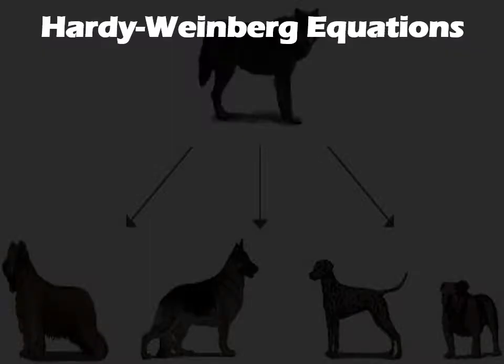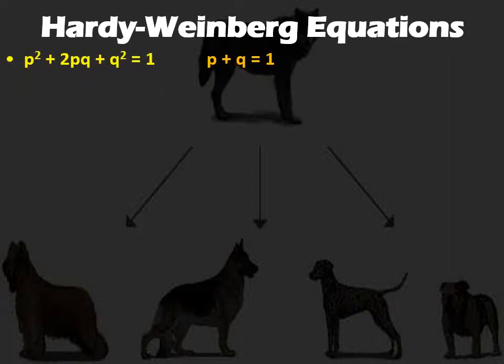We use allele frequencies to figure out what's happening to a population. There's a set of equations from the Hardy-Weinberg principle. P and Q represent the dominant and recessive allele frequencies. We write them in decimal form, from 0 to 1, where 0 is 0% and 1 is 100%. Because we're looking at frequencies, all values in the equations should ultimately equal 1. P plus Q — the number of dominant alleles plus the number of recessive alleles — should collectively equal 100% of the alleles in that population.